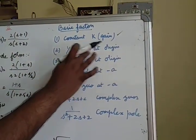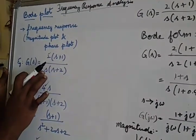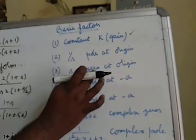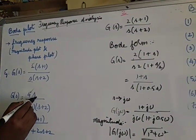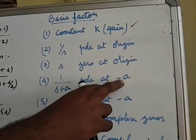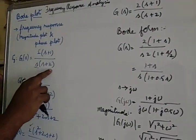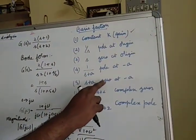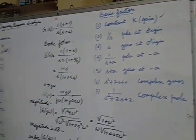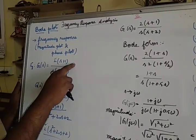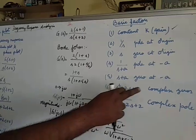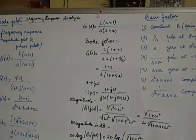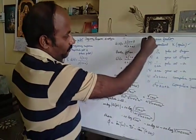Then we have a pole at the origin, that is 1/s. We have a pole at minus a, that is 1/(s+a). For example: 1/(s+2), 1/(s+1), 1/(s+2). We also have a zero at minus a, that is (s+a) format — for example (s+1). Similarly we may have complex zeros and complex poles. Any transfer function will be a combination of these components.